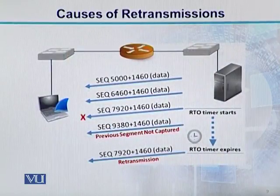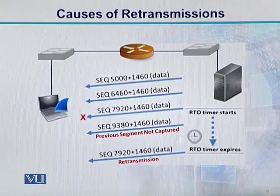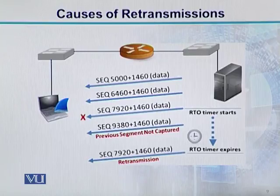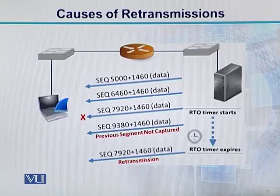Agar aap is diagram mein dekhen, toh is diagram mein humein kya dikhaya hoga? Hamare paas ek laptop hai, is laptop ke upar Wireshark chal rahi hai. Yeh jo laptop hai, connected hai switch ke saath, switch connected hai router ke saath, aur router connected hai ek aur switch ke saath, aur finally hamara server hai. Toh hamara client aur server aapas mein communicate kar rahe hain, aur yeh retransmission ko demonstrate kar rahe hain. Server ne chaar packets generate kiye: pehla packet number 1, uska sequence number hai 5000, aur is packet mein 1460 bytes ka data tha.